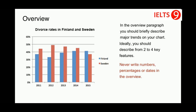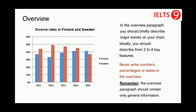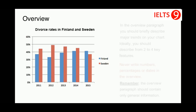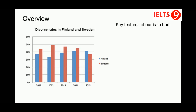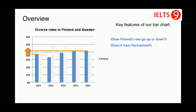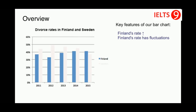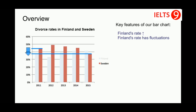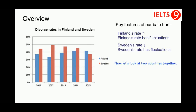In the overview paragraph, you should briefly describe major trends on your chart. Ideally, describe 2 to 4 key features. Never write numbers, percentages, or dates in the overview — it should contain only general information. Finland's rate overall goes up but shows some fluctuations. Sweden's rate goes down throughout the period and also shows some fluctuations. Initially Finland's rate was lower than Sweden's rate, but at the end of the period Finland's rate became higher, outracing Sweden's rate.